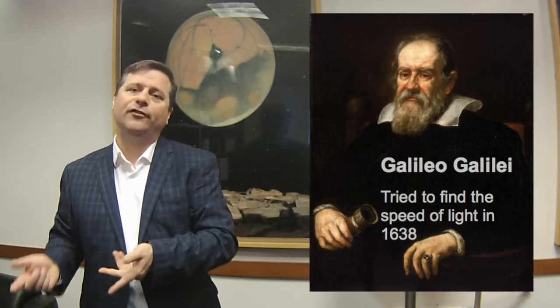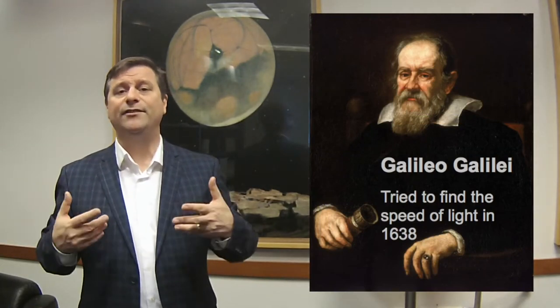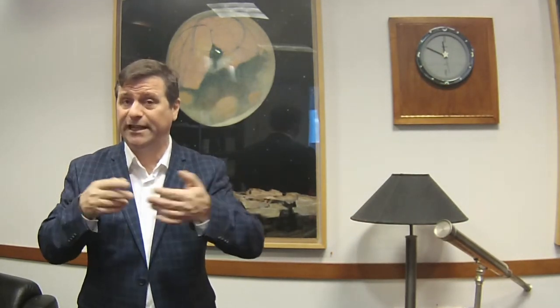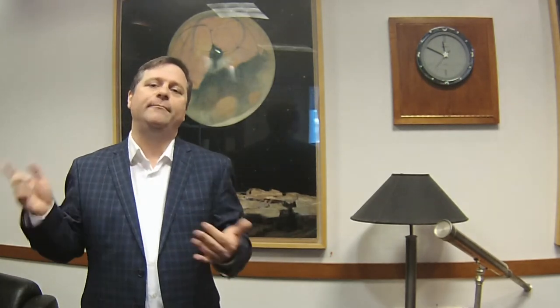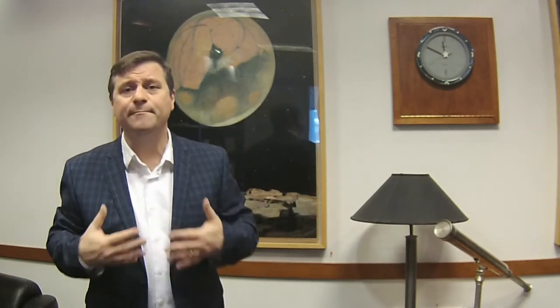Back in 1638, Galileo actually tried to measure the speed of light by putting people with lanterns on hilltops miles apart. He would open his lantern and when the other person saw it, they'd open theirs, and he'd time it with his heartbeat — all he had in 1638. With people miles apart, he couldn't find any difference. It was too fast for his heartbeat — about the same time as it took someone to lift their lantern. So he said, if it's not infinite, it's really fast.